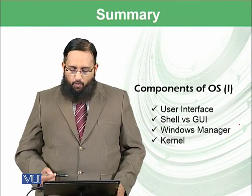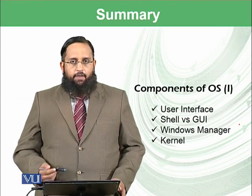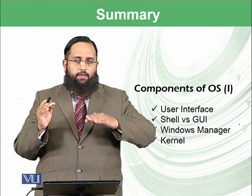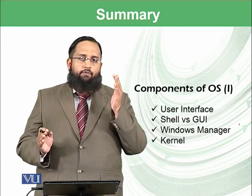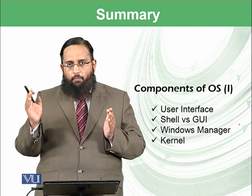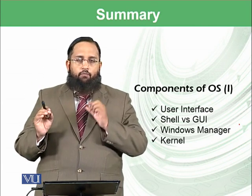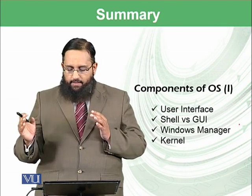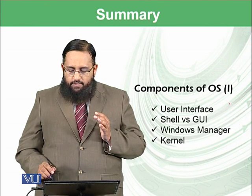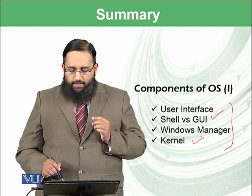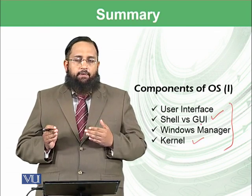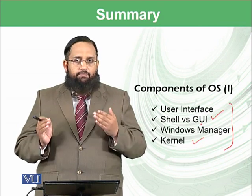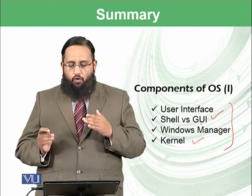To conclude today's topics, we have learned about different components of the operating system. We started from the classification of software — application softwares and system softwares — and within system software we covered utility softwares and then the operating system. Within the operating system we found two things: user interface and kernel. We focused on user interface and kernel, discussed shell versus GUI, and learned with an example how the Windows Manager manages different windows under the heading of GUI.